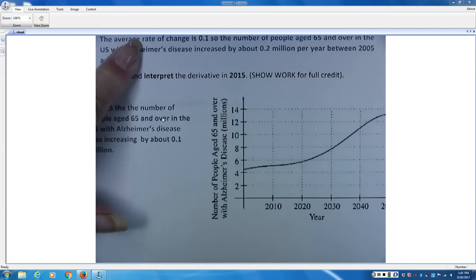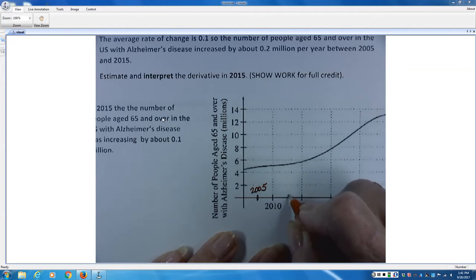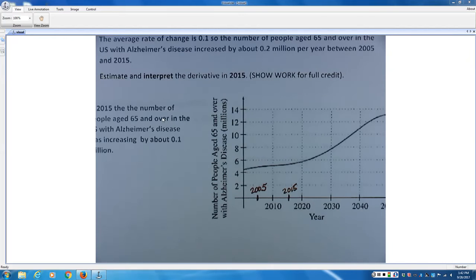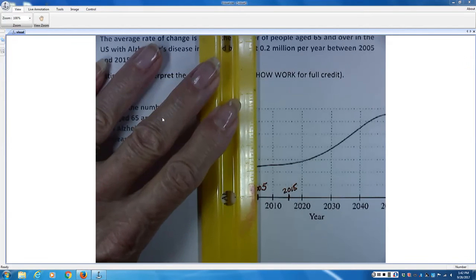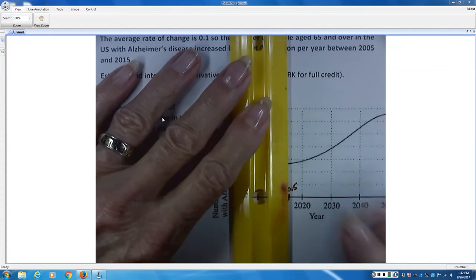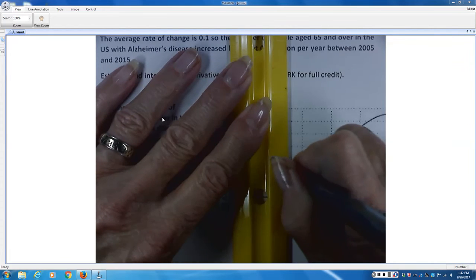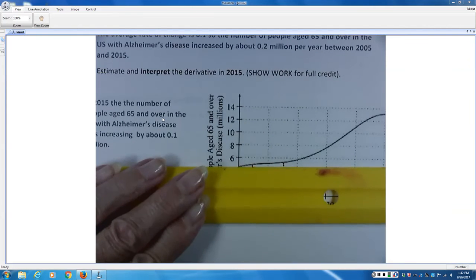So part A says between 2005 and 2015. Okay, here's 2005. And here's 2015. So what you want to do is you want to go straight up on the graph for those two years. And then you're going to have to give it your best guess as to what the y value is for that point.